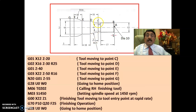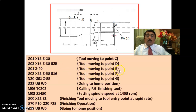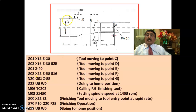G02, X16, Z-30, R25 — circular interpolation clockwise, tool moving to point D with radius 25. Feed F35 is attached. Then G01, Z-40 — tool moving to point E. G03, X22, Z-50, R16 — circular interpolation anticlockwise, E to F, tool moving to point F with radius 16. Then N20, G01, Z-55 — tool moving to point G. All coordinates A, B, C, D, E, F, G have now been defined between N10 and N20.